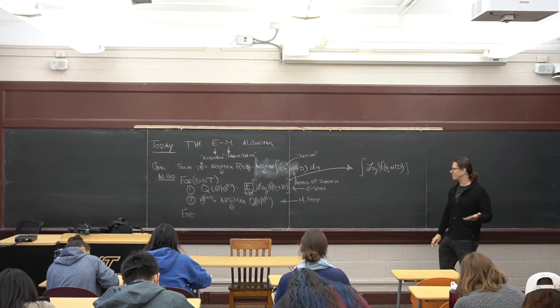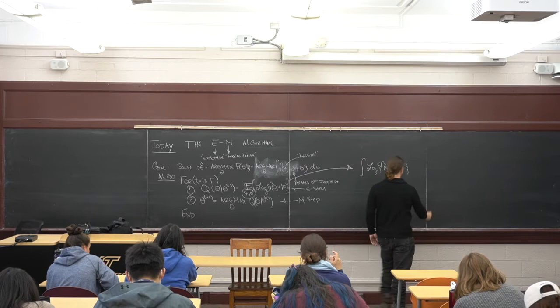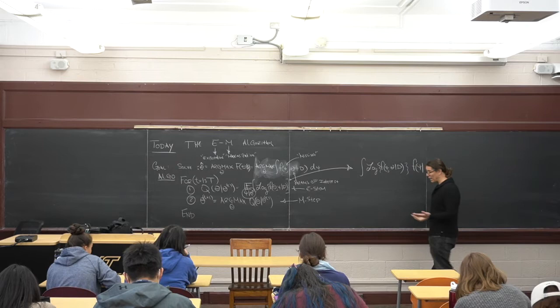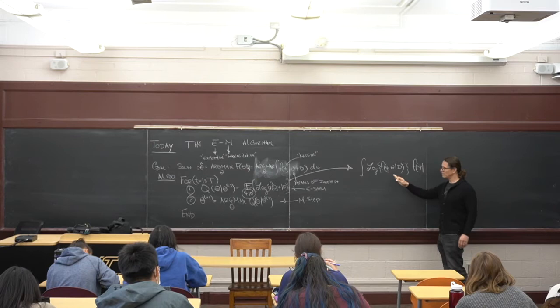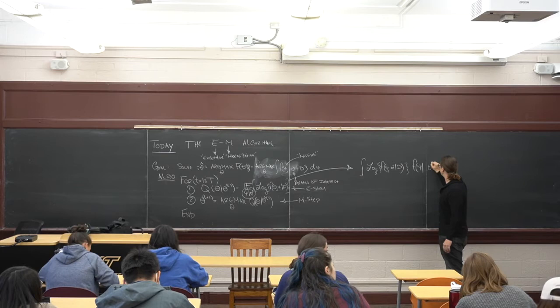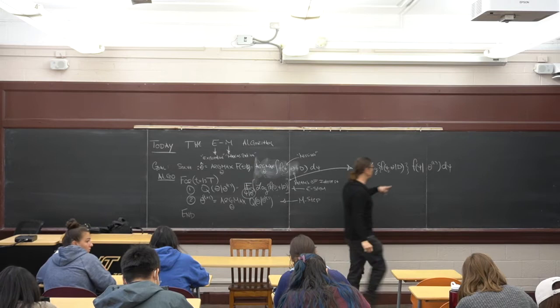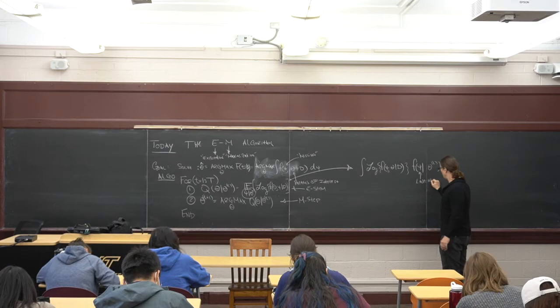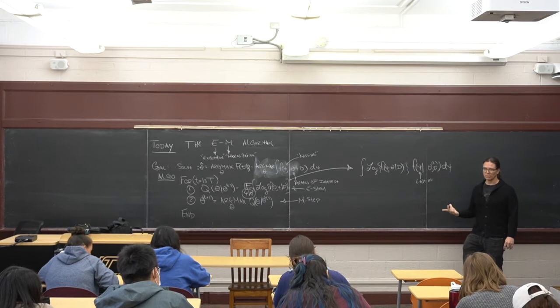Everything is conditional on the data, so this is the expectation with respect to a density function - a probability distribution on psi. As soon as I write that down as an expectation I'm integrating with respect to a density. If this were discrete, this integral would be a sum. This is going to be theta_t conditional on theta_t - you might understand why I think of this as Bayesian: I've got some distribution on the latent stuff. This is a conditional posterior distribution. I don't know any other way to think about that.